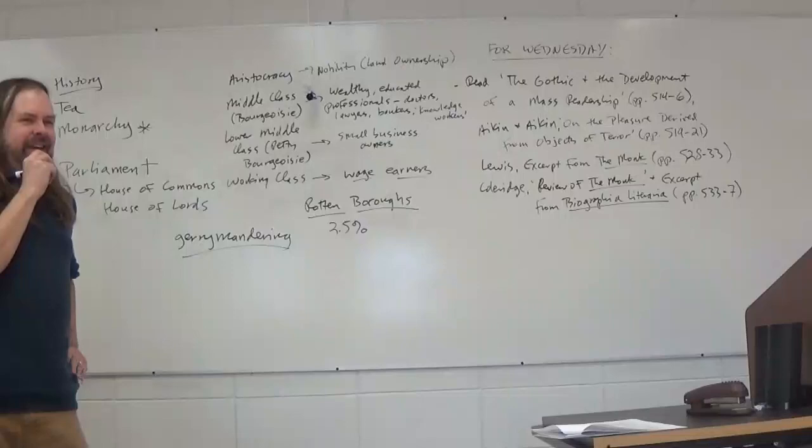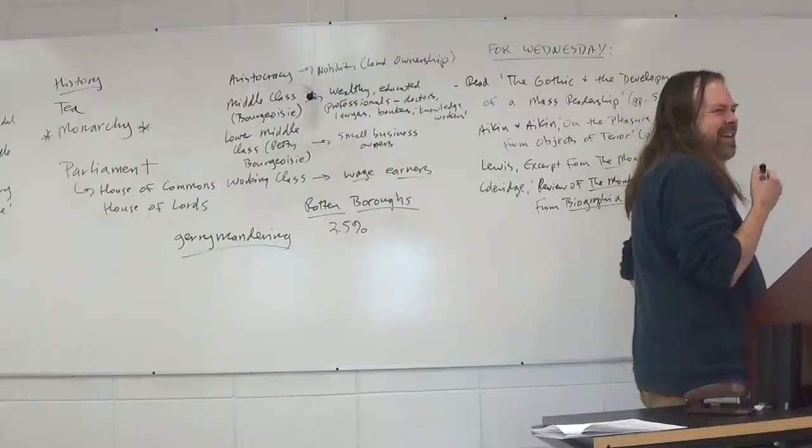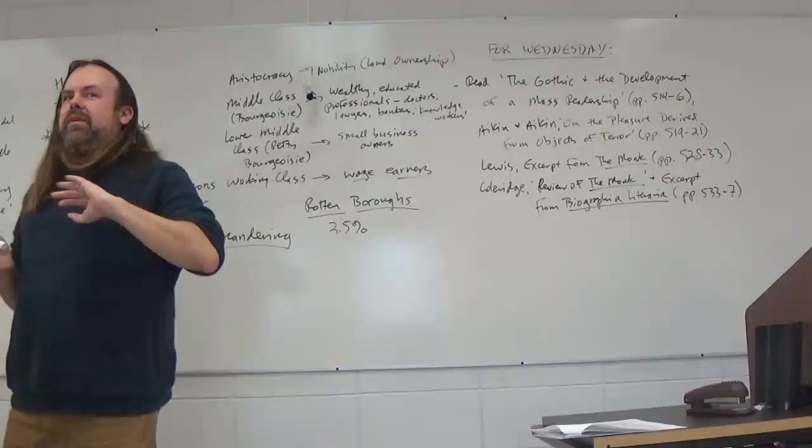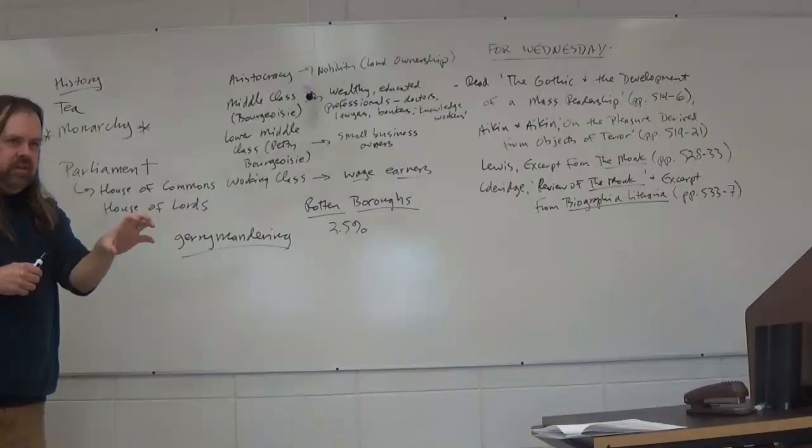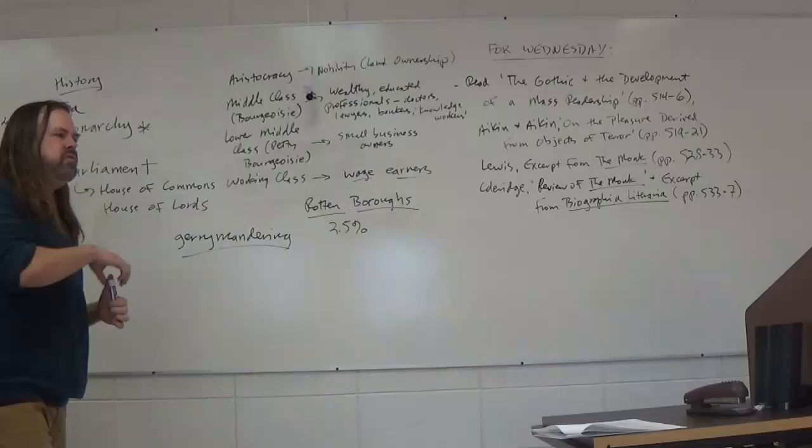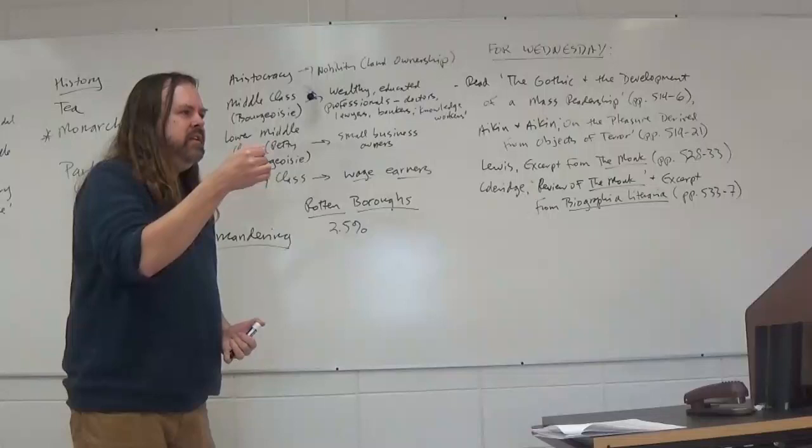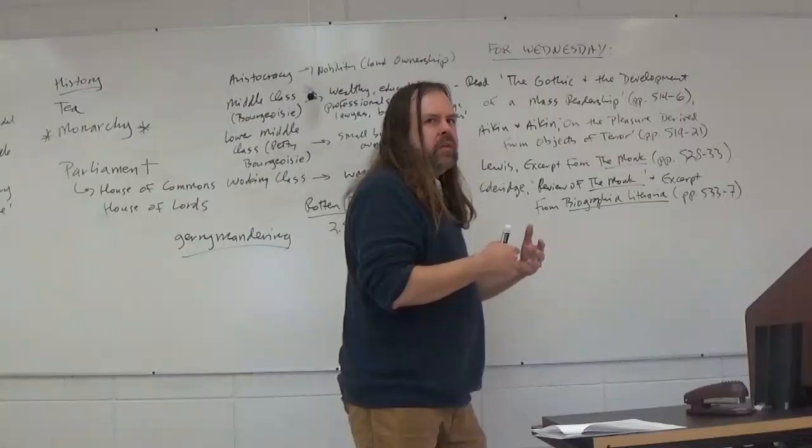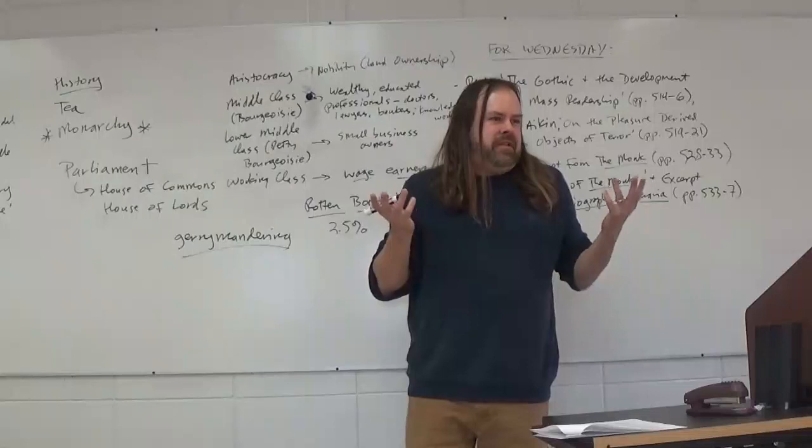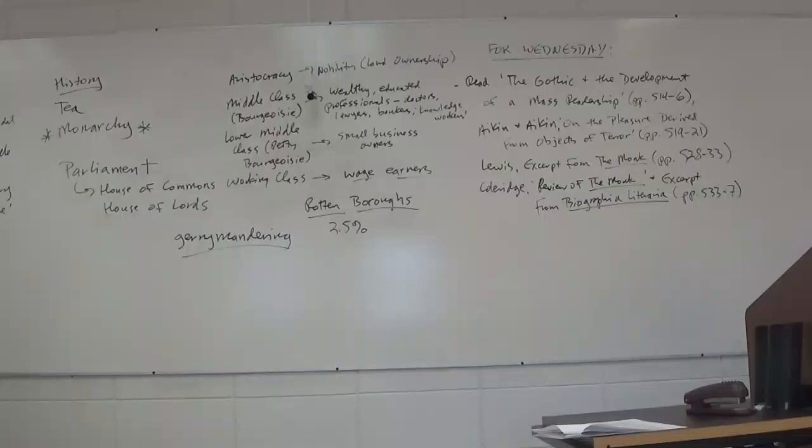One thing that we see is that because the aristocracy was concentrated in the country and particularly in the south, the rural south of England was way overrepresented in parliament, whereas the industrializing north and cities generally tended to be underrepresented. That was where the power base of the Whigs was, so that limited their representation. The radicals were speaking for people the Whigs and the Tories couldn't give a shit about by and large.